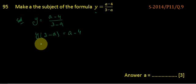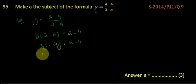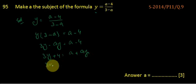So we open it: 3Y minus AY. We write A minus 4 here as it is. We can write 3Y plus 4 equals A plus AY, or we may write 3Y plus 4 equals, we take A as common.